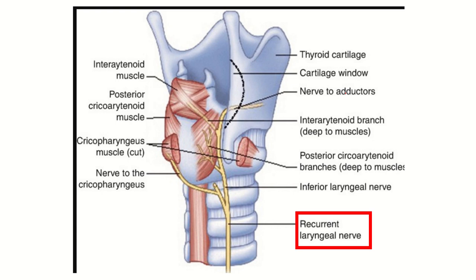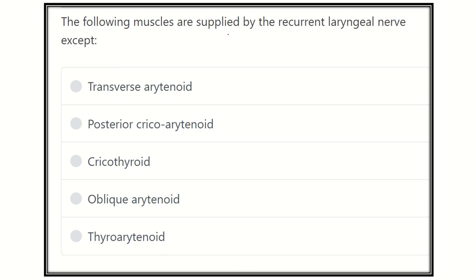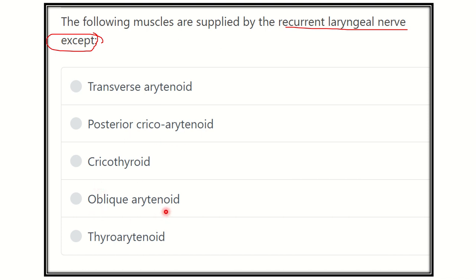Welcome to another question and answer session for the MRCS exam. The question is: the following muscles are supplied by the recurrent laryngeal nerve, EXCEPT — meaning which muscle is NOT supplied by the recurrent laryngeal nerve. The options are: transverse arytenoid, posterior arytenoid, cricothyroid, oblique arytenoid, and thyroarytenoid.